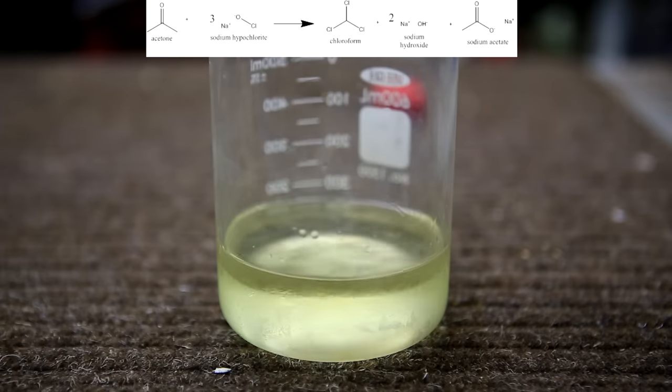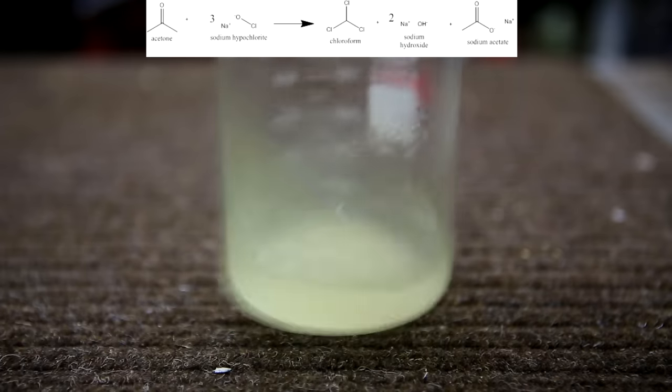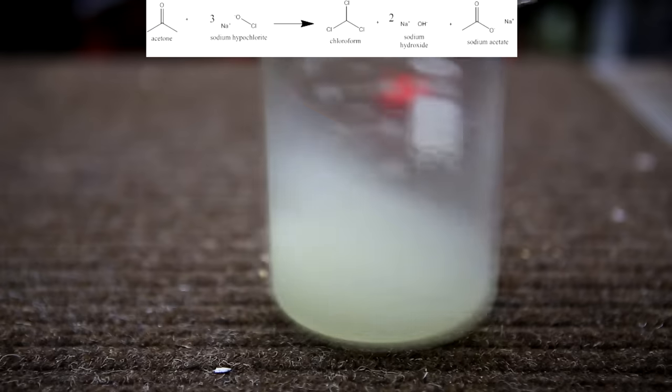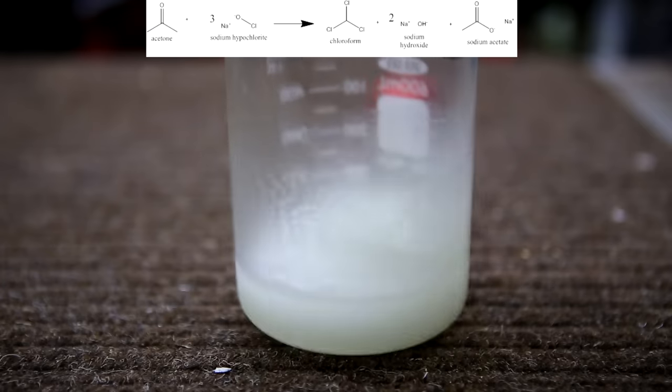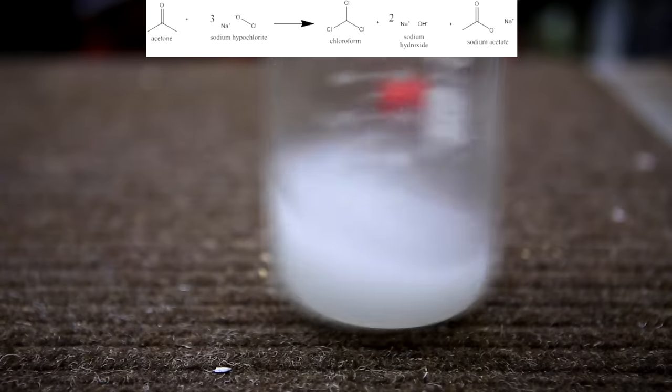For the purpose of the video I will visually demonstrate the reaction between the acetone and the bleach. When the acetone is added it reacts with 3 equivalents of sodium hypochlorite to form chloroform, sodium hydroxide and sodium acetate.